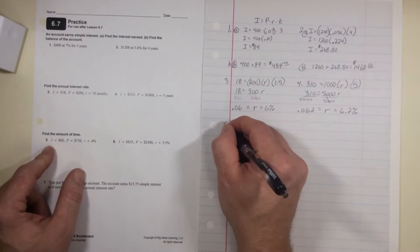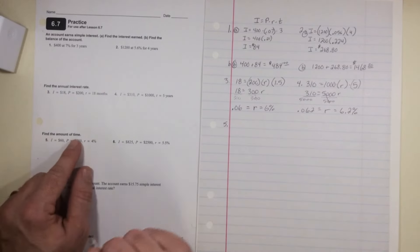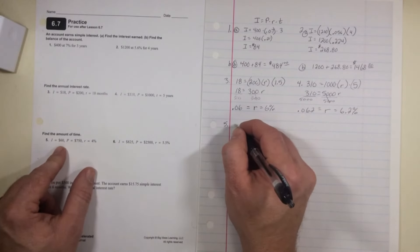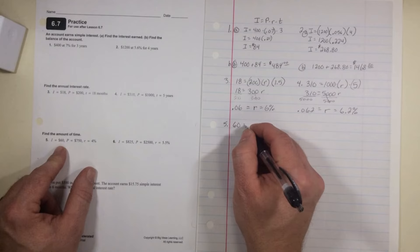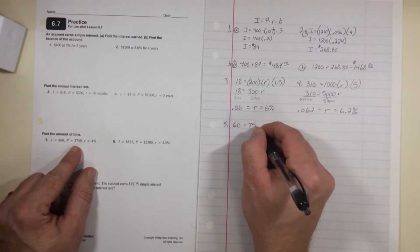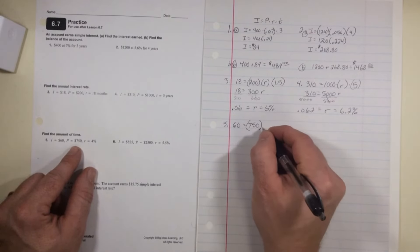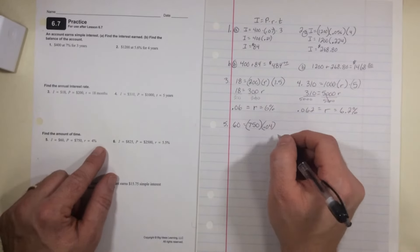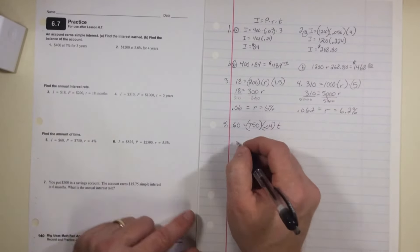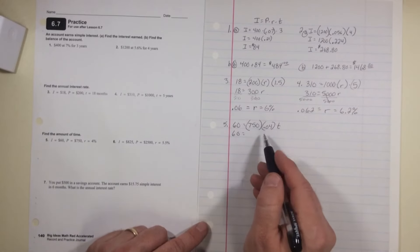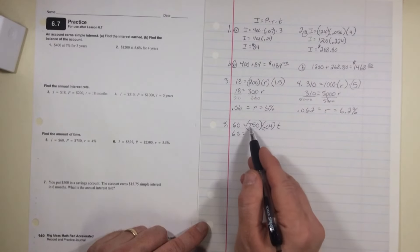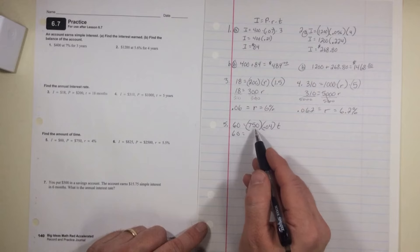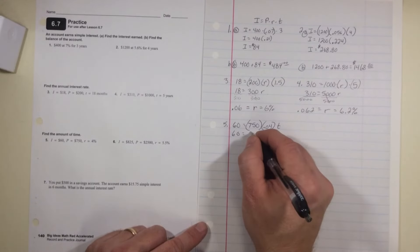Number five, now we're looking for the amount of time. So they give us the interest, $60 equals $750 times the rate, which is 0.04 because 4% turned into a decimal, times the time. $60 equals, well, 0.04 times $750...